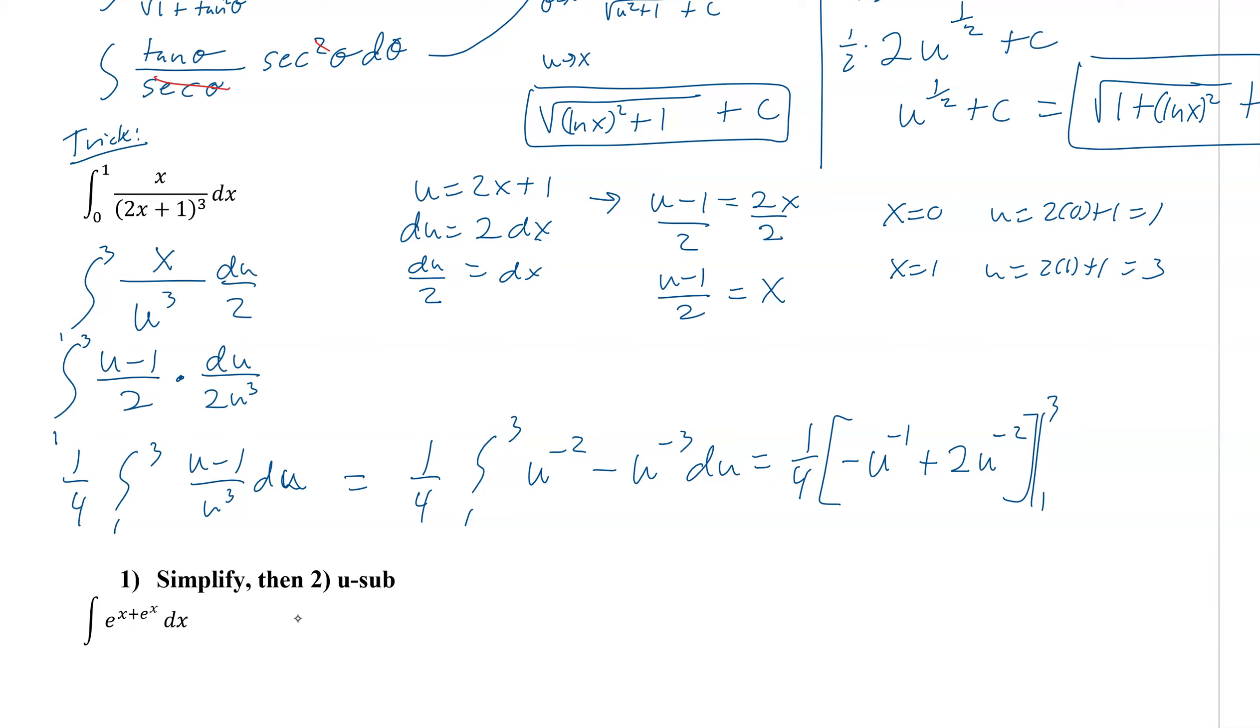And we can simplify this. So if we finish this by plugging it in and doing all the work, we're going to get 1 over 18. Just like that. I know you know how to simplify this, so I'm not going to waste your time. All right. So that is another method for u-substitution.